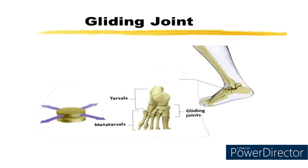Gliding joint: this kind of joint is found in the ankles, wrists, and between any two vertebrae of the backbone. It allows bones to slide past each other, which helps our back to bend, twist and turn at any point.